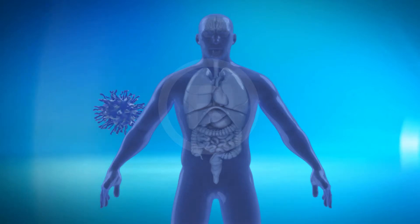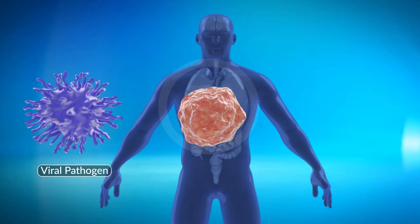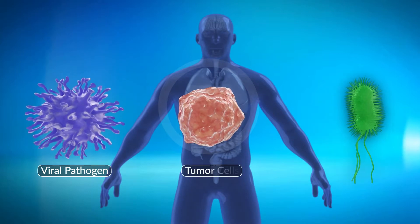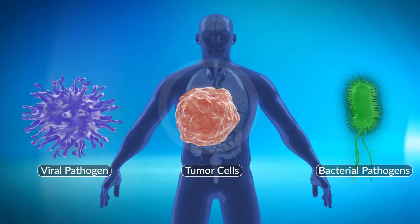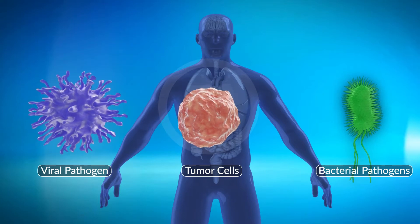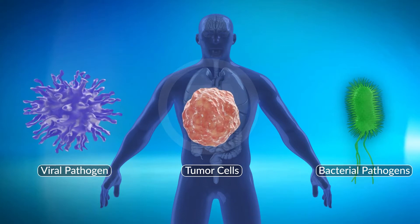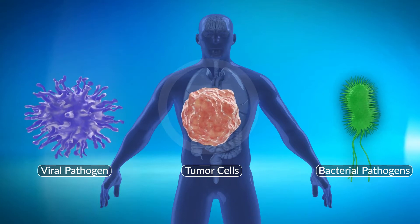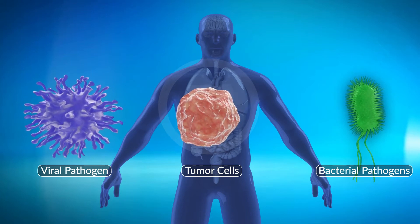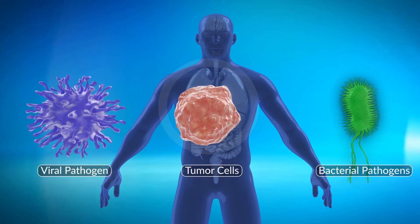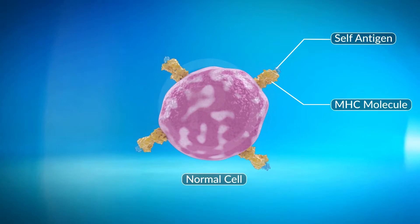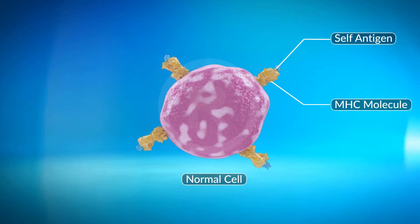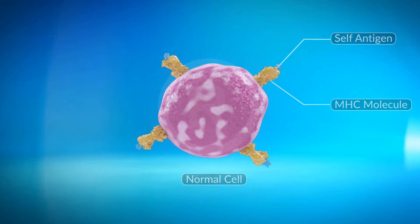The immune system protects the host from viruses, bacteria, and other pathogens that attack externally, and simultaneously protects the host from the growth of abnormal cells such as cancer within the system. The immune response is complex but highly specific. Throughout the process, the immune system is uniquely adapted to differentiate between the self and the non-self cells and tissues.